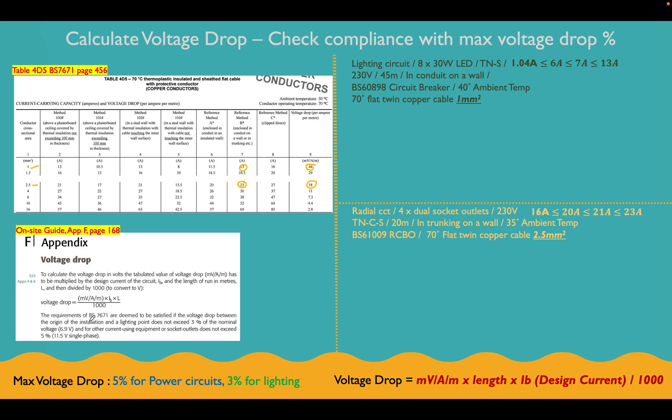Let's read here, just in case we forget this. The requirements of 7671 are deemed to be satisfied if voltage drop between the origin of the installation and a lighting point does not exceed 3% of the nominal voltage. So basically, from the start to the end of our circuit, we need the voltage drop to not exceed 3%.